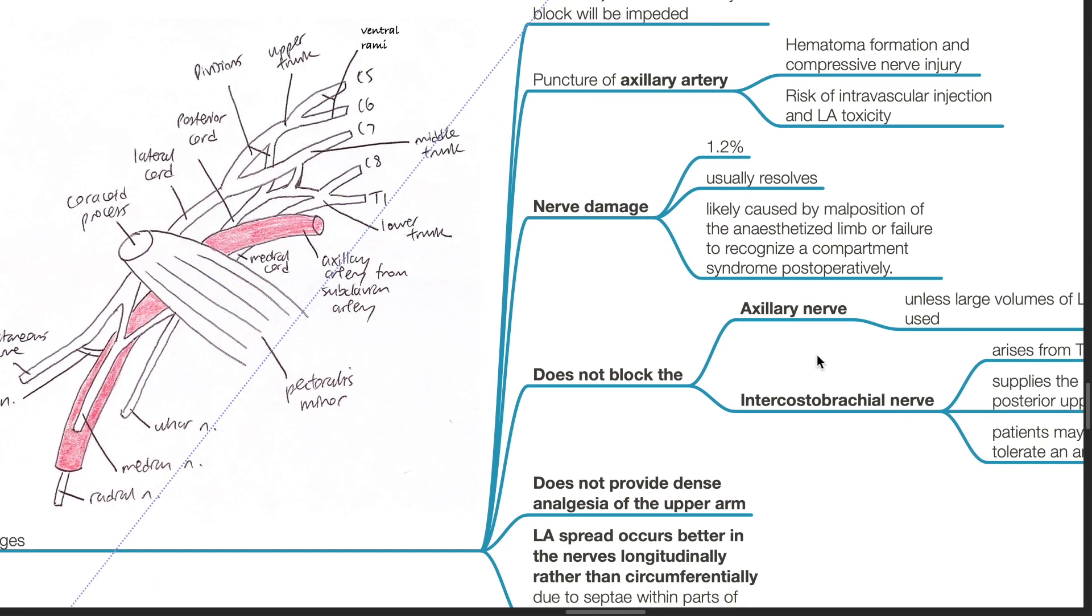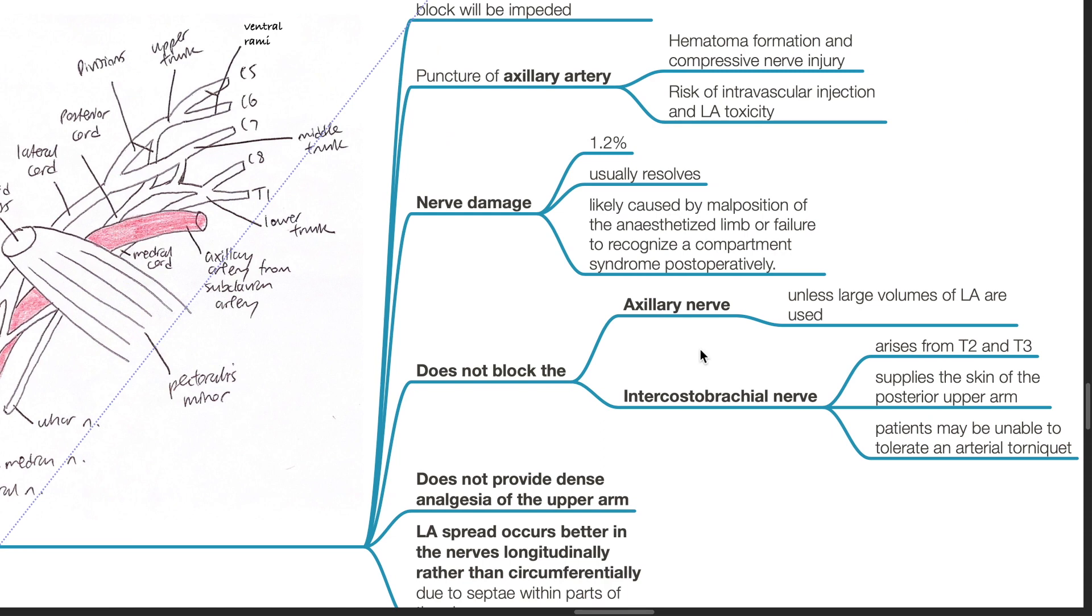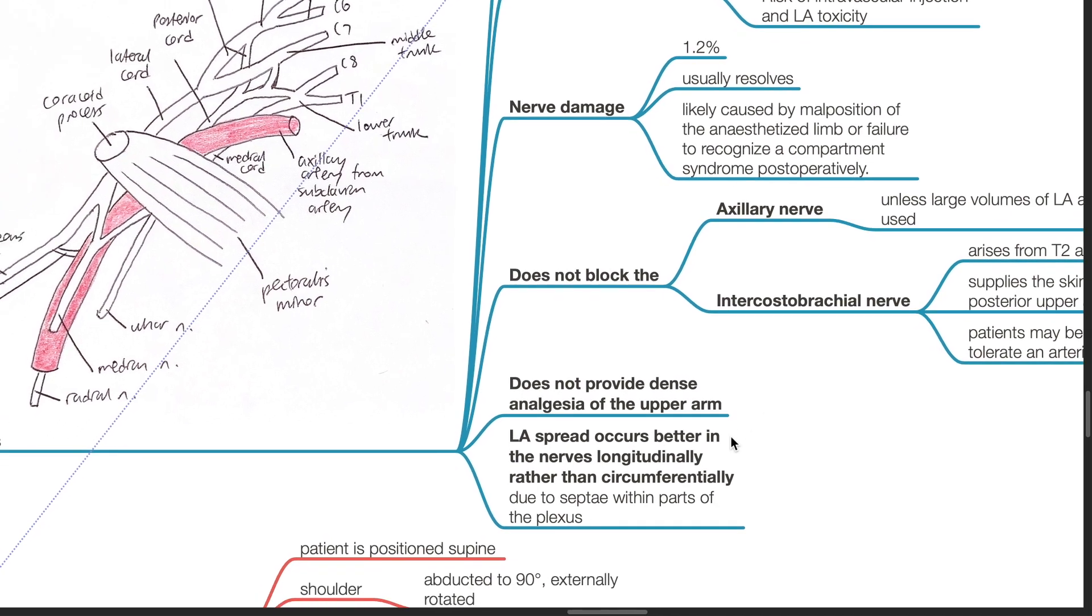The axillary block does not block the axillary nerve nor the intercostal brachial nerve. The axillary nerve is not blocked unless large volumes of local anesthetic are used. The intercostal brachial nerve arises from T2 and T3 and supplies the skin of the posterior upper arm. The patients may be unable to tolerate an arterial tourniquet if the intercostal brachial nerve is not blocked. The axillary block does not provide dense analgesia of the upper arm. Local anesthetic spread occurs better in the nerves longitudinally rather than circumferentially due to septae within parts of the plexus.